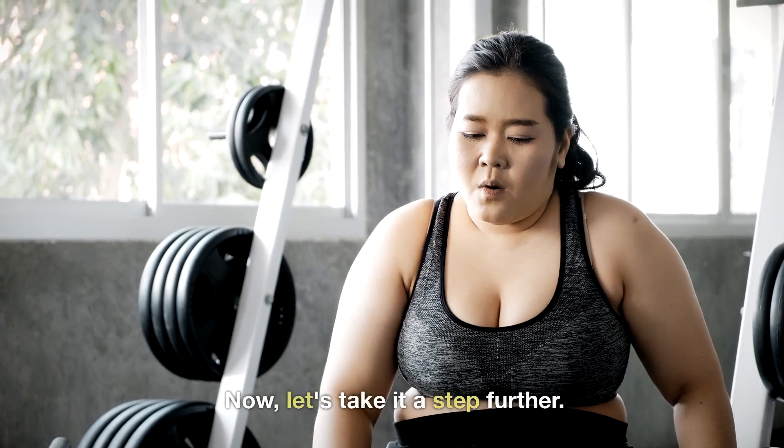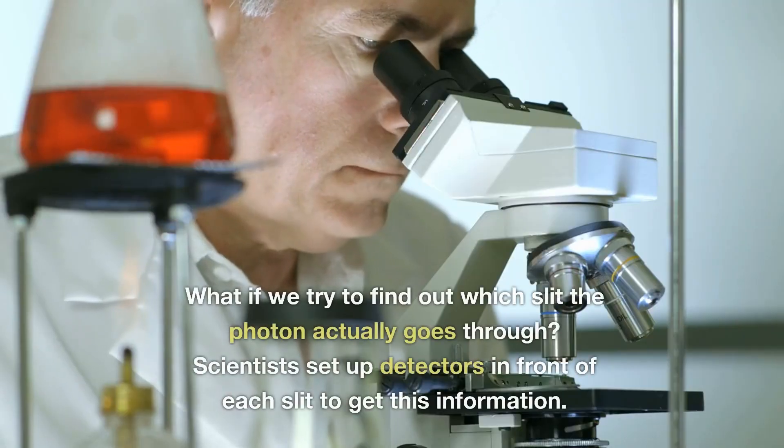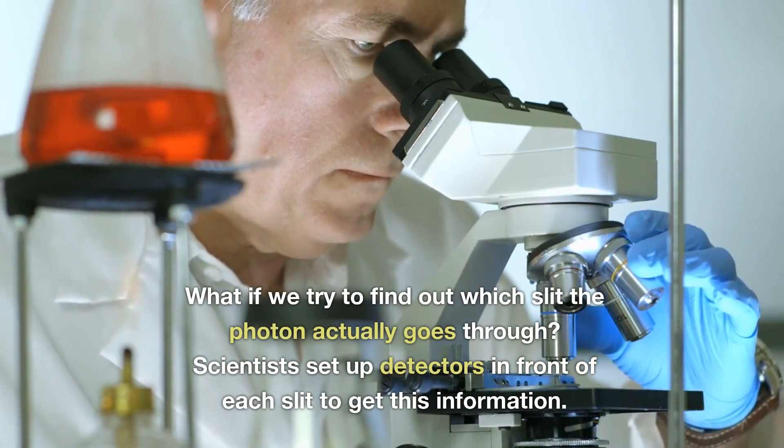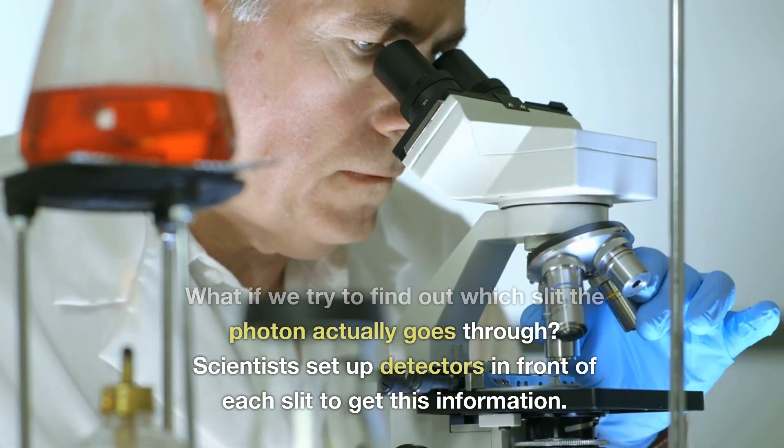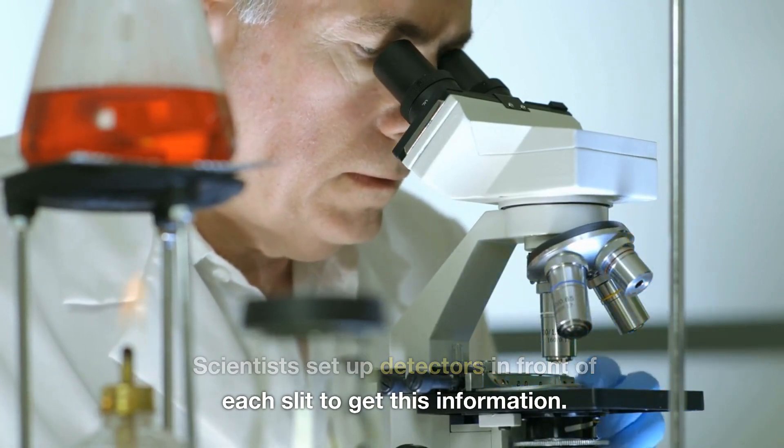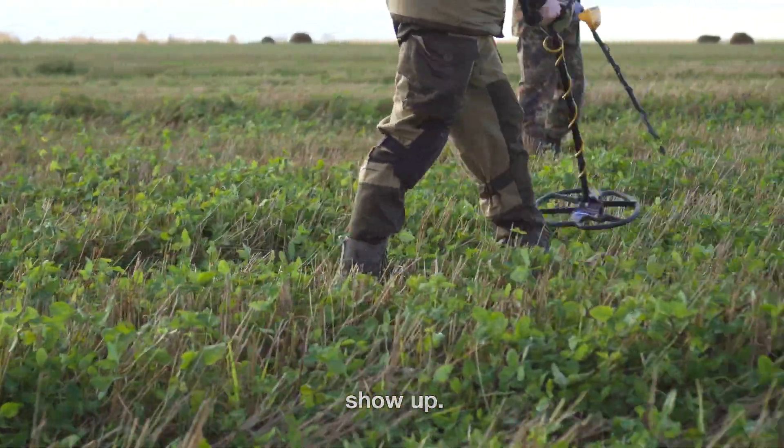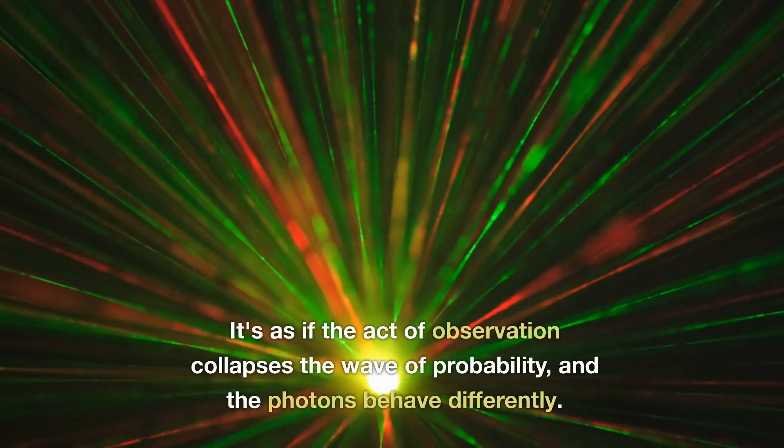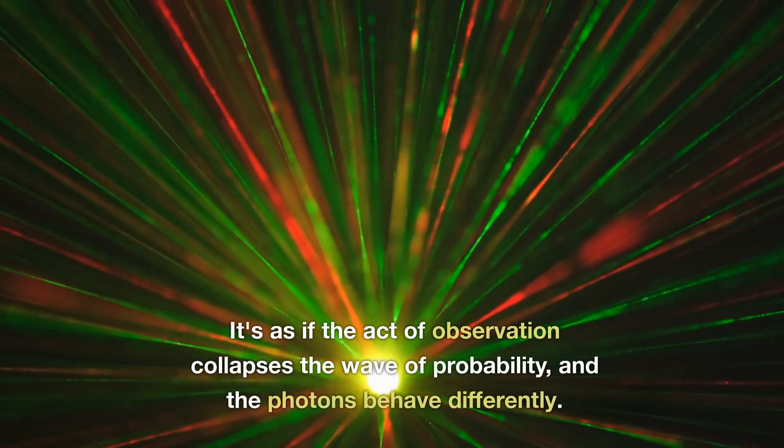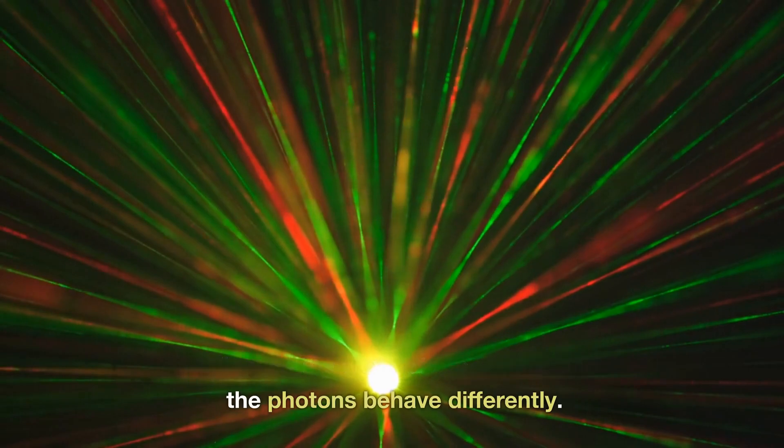Now, let's take it a step further. What if we try to find out which slit the photon actually goes through? Scientists set up detectors in front of each slit to get this information. But here's the twist. The interference pattern disappears completely. Even when the detectors are placed behind the slits, the pattern refuses to show up. It's as if the act of observation collapses the wave of probability, and the photons behave differently.